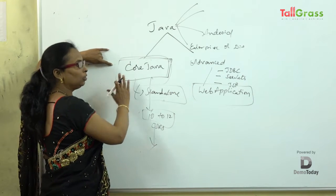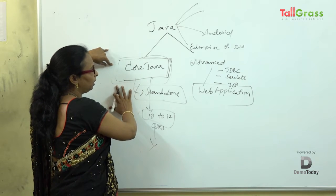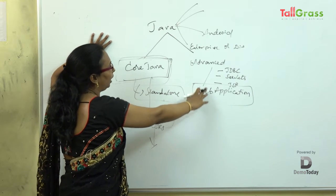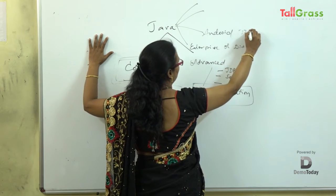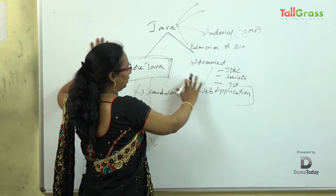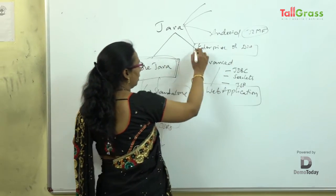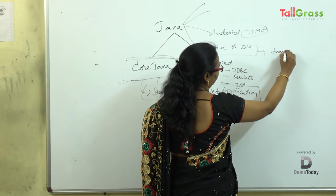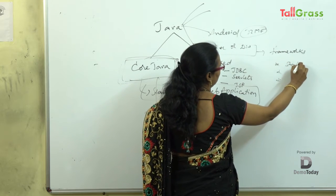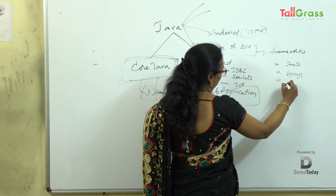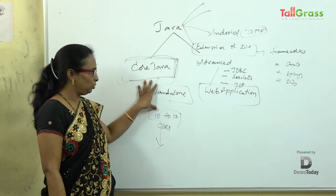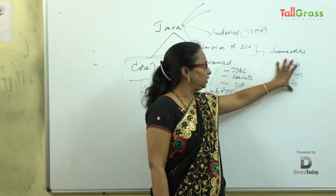Those who have learned core Java can go in three different directions. One is becoming a web developer after learning the three advanced topics. After learning core, they can go for Android — we call it J2ME — where they develop mobile applications. And after learning core and advanced, they can go on to develop distributed applications, where they need to learn frameworks like Struts, Spring, and Hibernate.